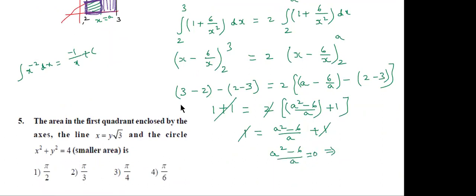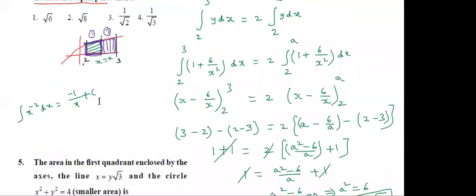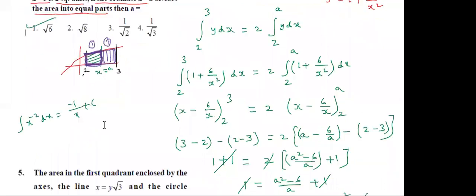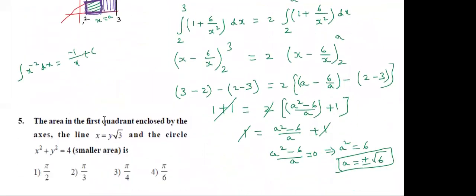Therefore A² = 6, so A = ±√6. By observing the options, only +√6 is given. That is the first option. The final answer is A = √6.